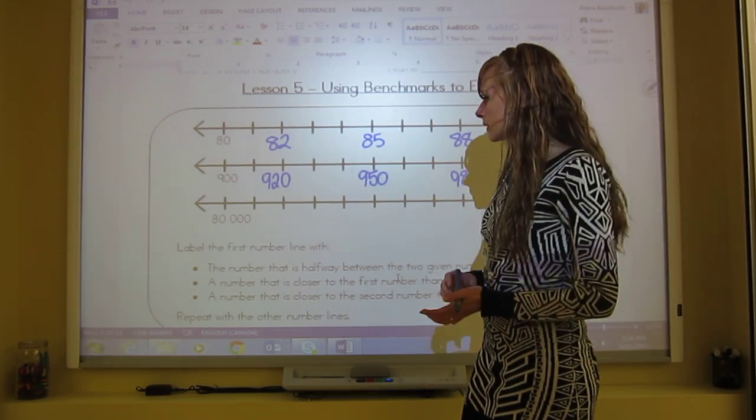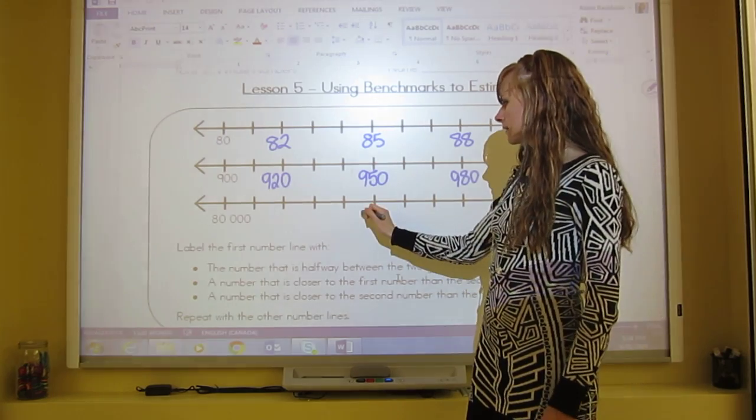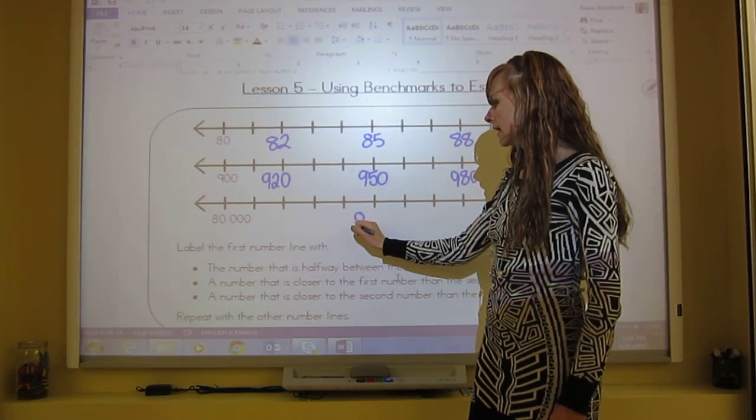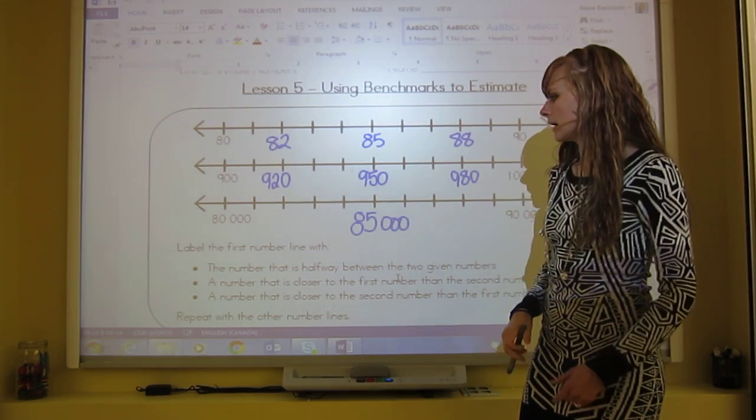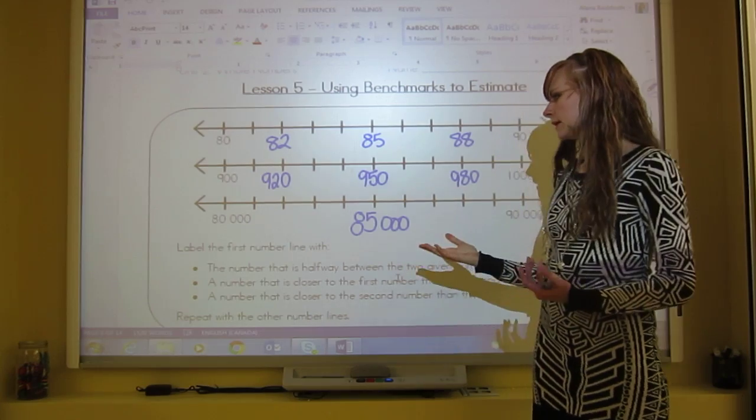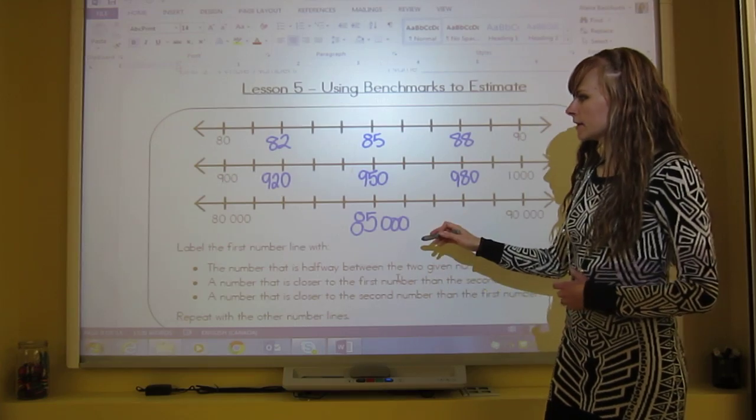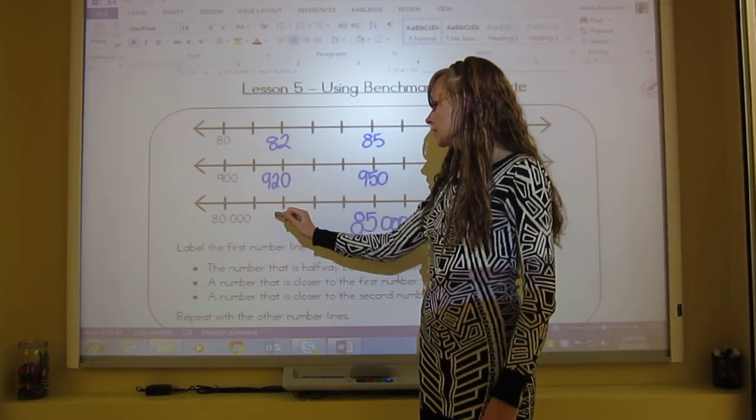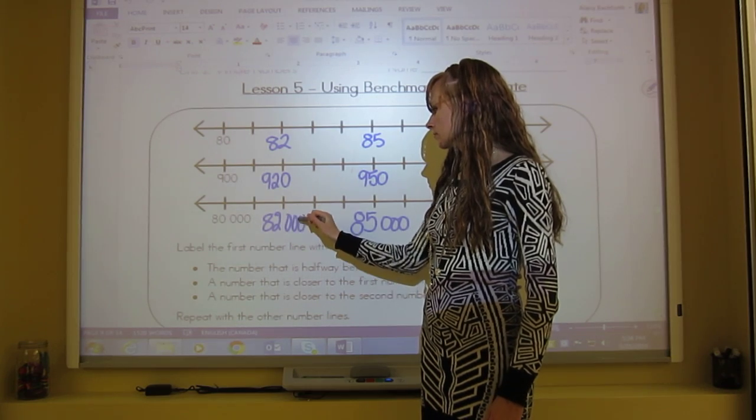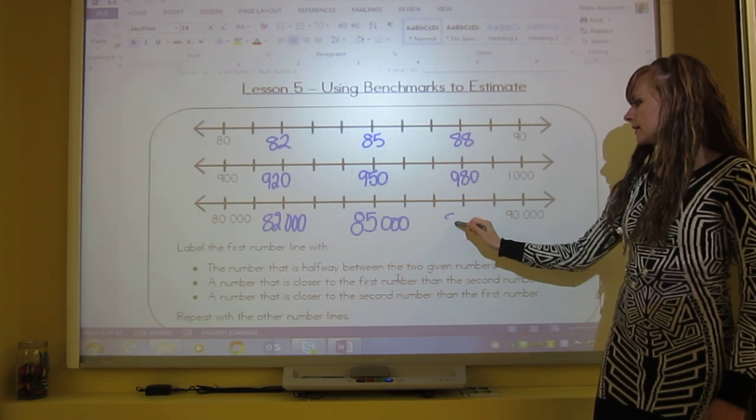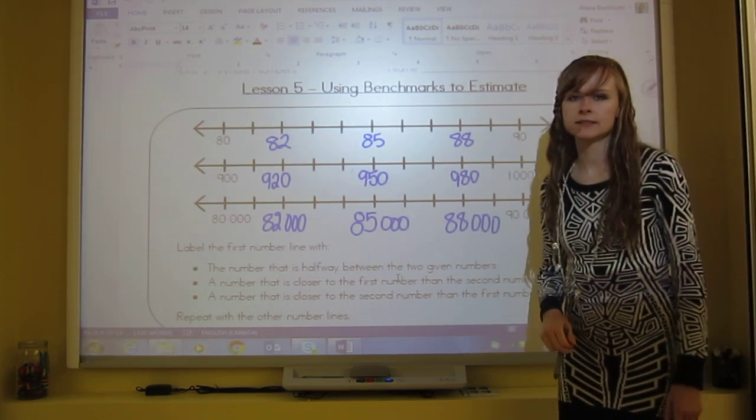And then the last one here, what's halfway between 80,000 and 90,000? Well, it's going to be this tick right here because it's the middle of the line. We're going to put a 5 again, and then we just have those three zeros. So 85,000 is in between 80,000 and 90,000. A number that is closer to 80,000 than 90,000, you could pick 82,000. And over here you could pick 88,000 or any of the other ones.